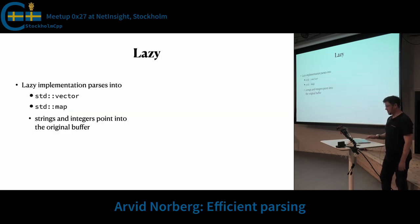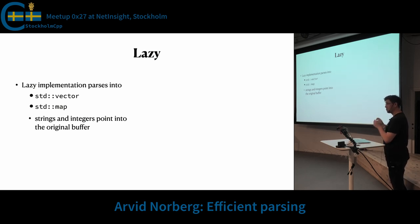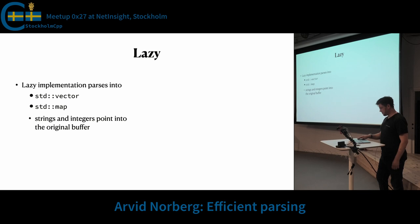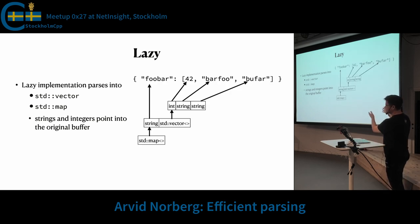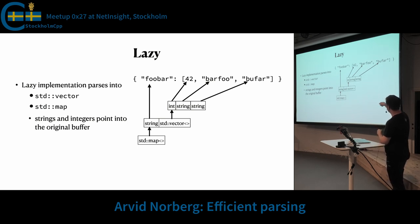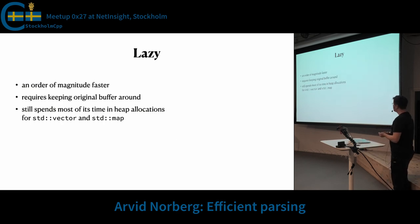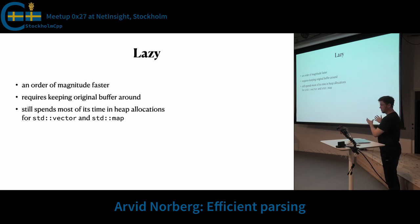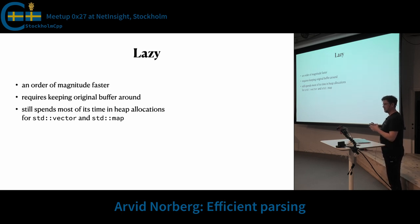My next attempt: I thought, what if I keep the vectors and the maps, but I never allocate the strings? I just make them sort of lazy and point back into the original buffer that I was parsing. So it looks sort of like this — you have the map, it contains a string and a vector, but the string now is not the std string; it just points to the string in the original buffer. Likewise, the int and the strings just point back into the original buffer. You still have the map and the vector, so there are some allocations going on. It's an order of magnitude faster, but it has the additional requirement that you need to keep the buffer around. It still spent most of its time in heap allocation.